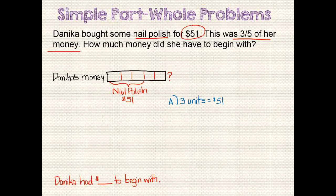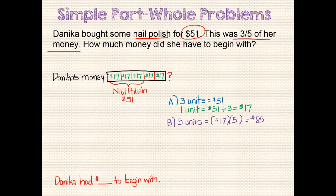Looking at our model, if 3 units equals $51, then 1 unit equals $51 divided by 3, which is $17. So each of these pieces is $17. That means that 5 units — the whole — will be equal to $17 times 5, which is $85. Danica had $85 to begin with.